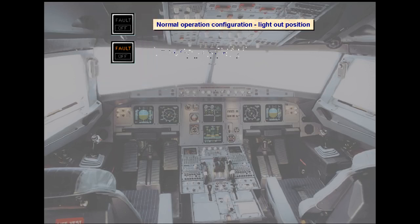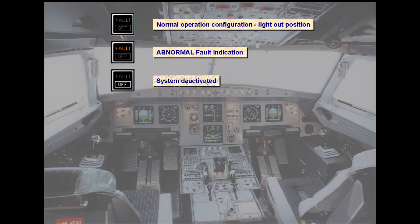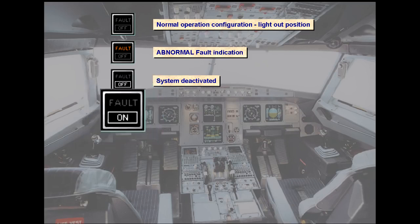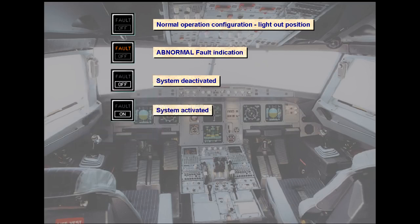Abnormal condition: amber fault light. This assists identification of the switch associated with an abnormal condition. Non-lights-out switch position: white light. If normally the system should be operating and is deactivated, a white off light is illuminated. If normally the system should not be operating and is activated, a white on light is illuminated.